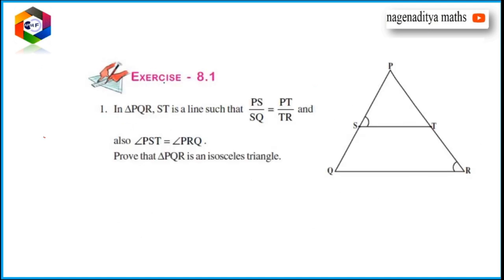Next, Exercise 8.1: In triangle PQR, ST is a line such that PS by SQ is equal to PT by TR, and also angle PST is equal to angle PRQ. Prove that triangle PQR is an isosceles triangle.